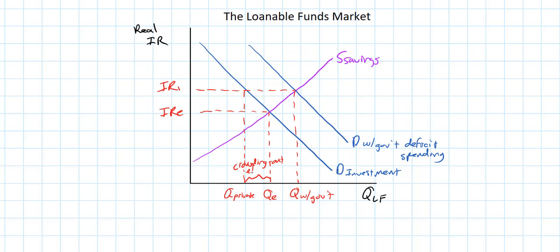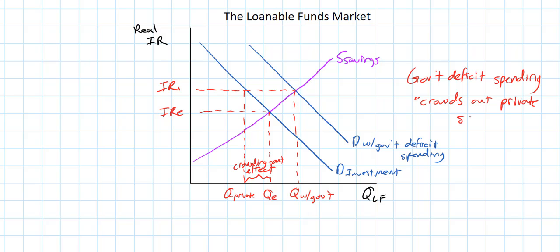Crowding out reduces the effectiveness of expansionary fiscal policy. When a government deficit spends, it has to borrow from the public, driving up the demand for loanable funds. However, this crowds out private investment, meaning that the increase in aggregate demand will be smaller than what the government anticipated or expected it to be.